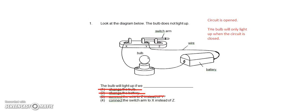So if we actually move the switch arm from Z right to X, it means that X and Y will be closed. X and Y is closed, therefore the bulb will light up. The answer to this question is option 4.